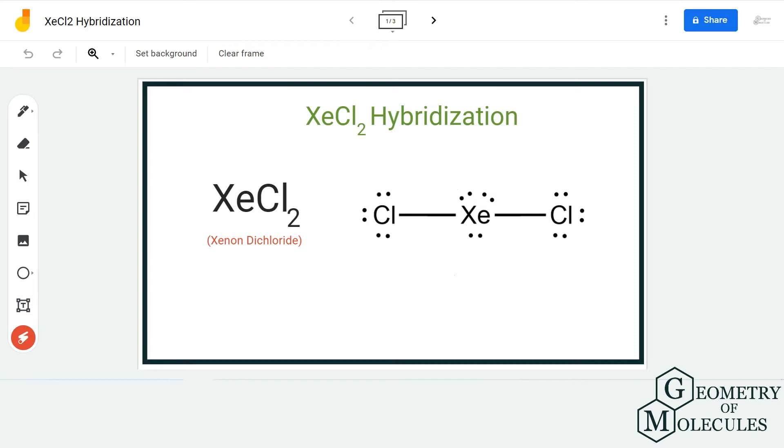To make it really easy and convenient for you to find out the hybridization, we are going to consider the steric number that can help us find out the hybridization. The steric number for this molecule would be 5